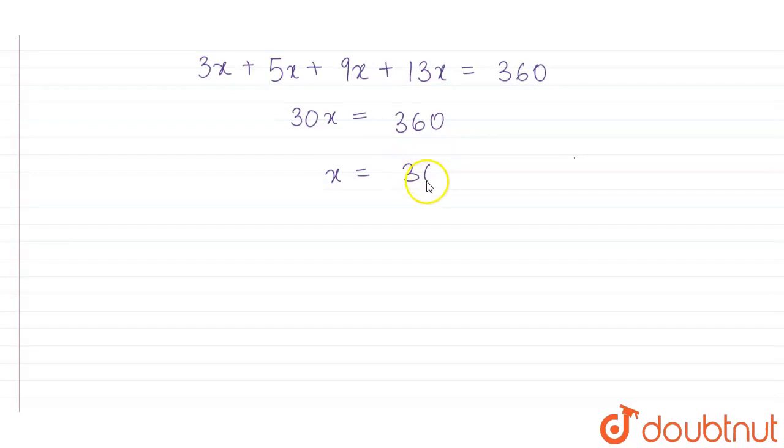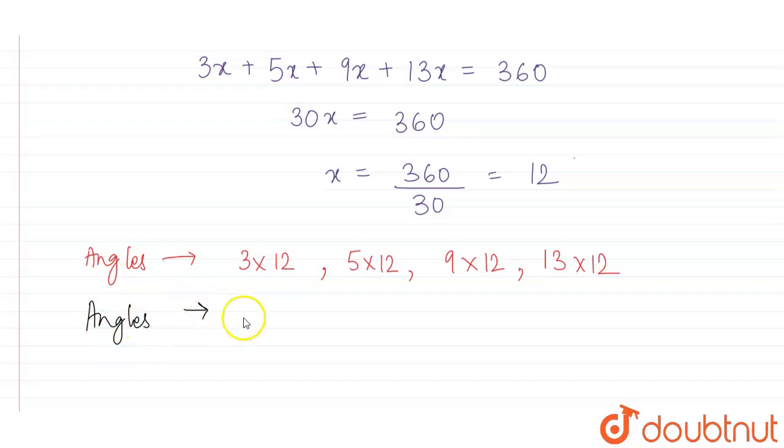x will be equal to 360 upon 30 which is 12. So now angles will be 3x, 5x, 9x and 13x. The angles will be 36 degree, 60 degree, 108 degree, and 156 degree.